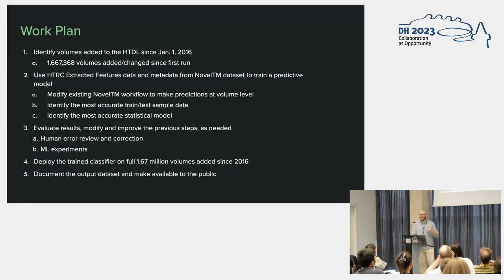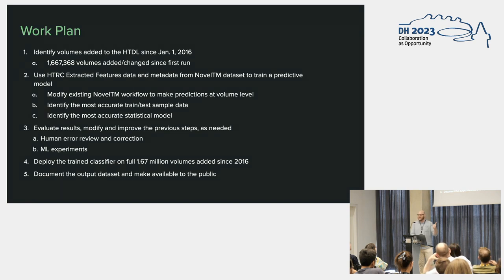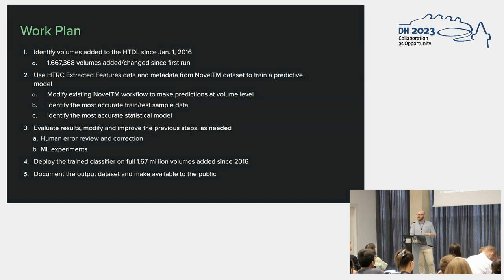On to methods — this is my work plan. You can probably tell I'm a humanist; I don't have a cool diagram with squares, so instead I have an outline. The first step was to identify the volumes added to the HDDL since 2016, leaving us with about 1.7 million candidate volumes in English language. Rather than looking at the raw text, we use the HathiTrust Research Center extracted features dataset, and we use the metadata from the NovelTM dataset. The extracted features are the features we're crunching; the metadata helps us identify subsets to train and test. We modified the approach to look at the volume level and tested a number of sampling logics.